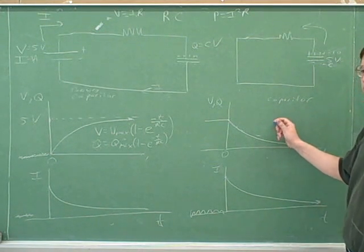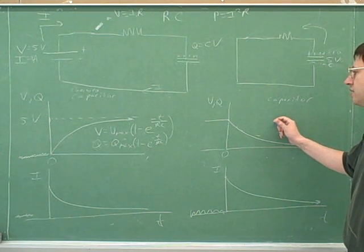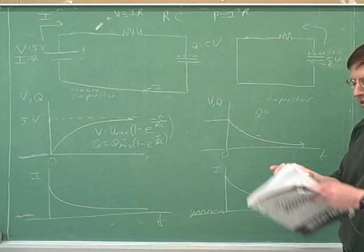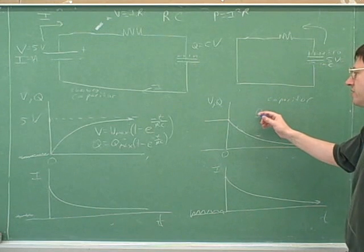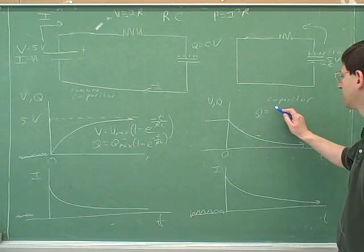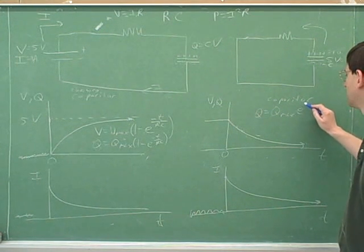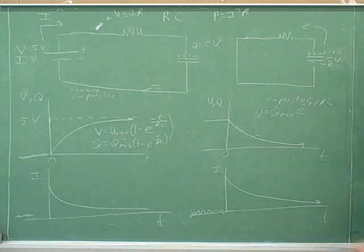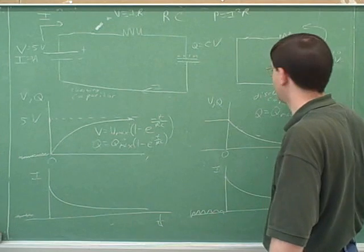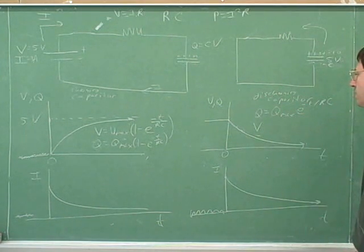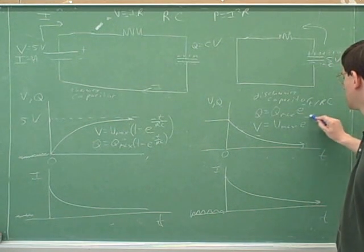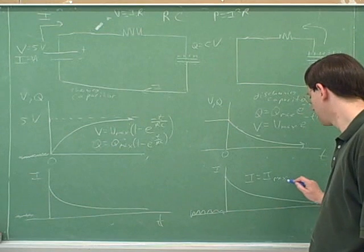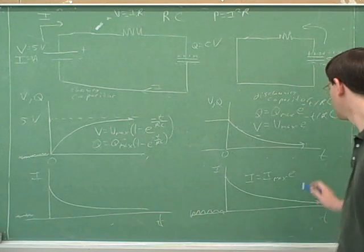What would be the equation for this graph? The charge is asymptotically decreasing, so it would be q equals q-max times e to the negative t over RC. It wouldn't look like the asymptotic increase equations — we need the equation for asymptotic decrease. The voltage equation would be V equals V-max times e to the negative t over RC. And the current equation would be I equals I-max times e to the negative t over RC.